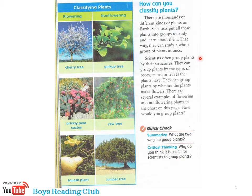Scientists often group plants by their structures. We can group plants by the types of roots, stems, or leaves the plants have. We can group plants by whether the plants make flowers. There are several examples of flowering and non-flowering plants in the chart on this page.